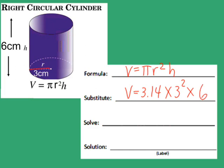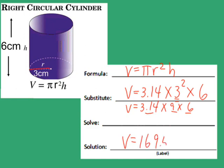Remember order of operations — we need to do the exponent first. So we do pi times 3 squared, which is 9, times 6. Using the commutative property of multiplication, I'll do 9 times 6 first, which is 54, then 54 times 3.14 using a calculator. The volume of this cylinder is 169.56 cubic centimeters.